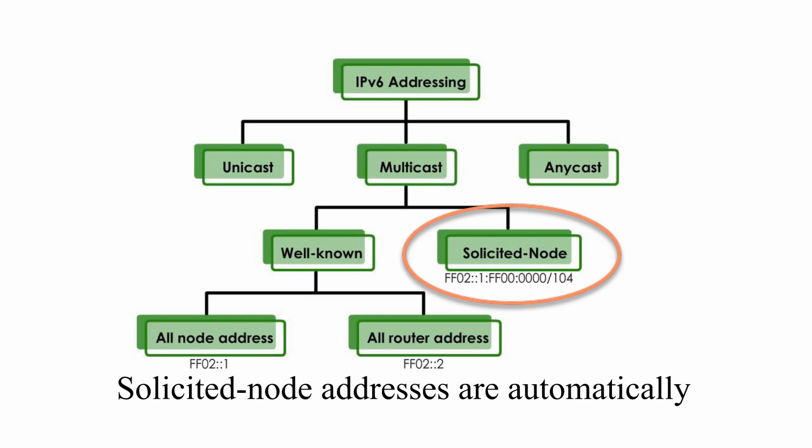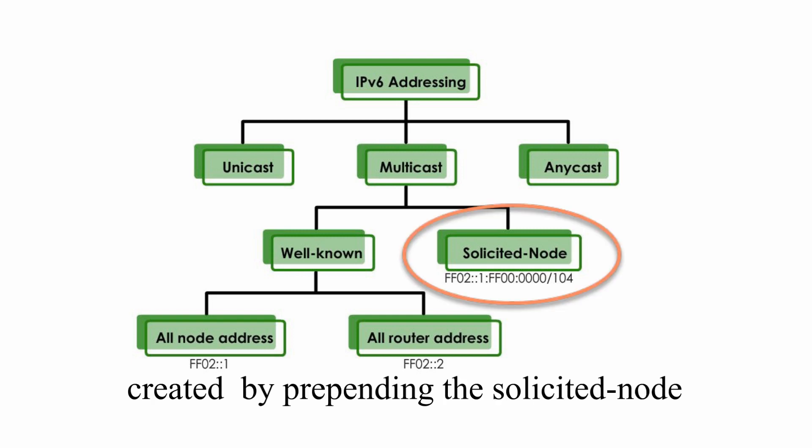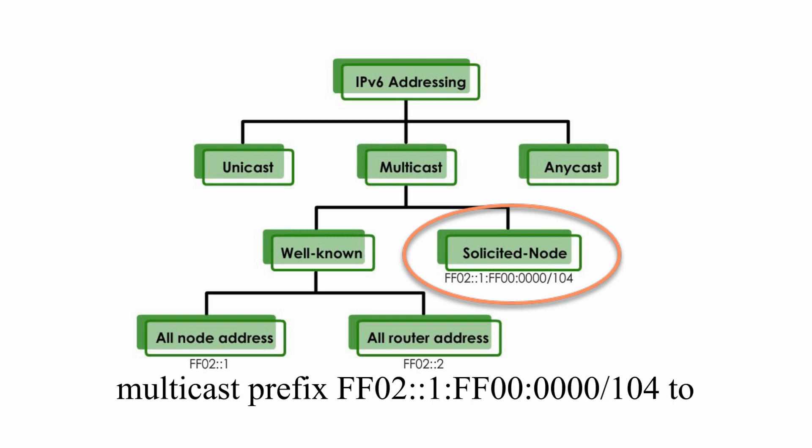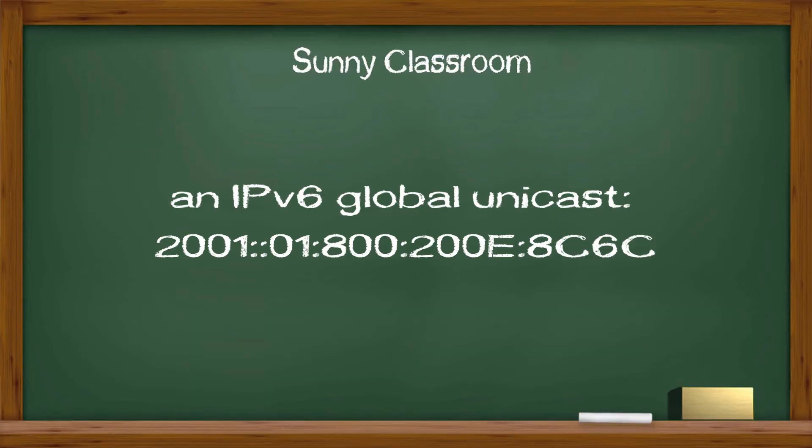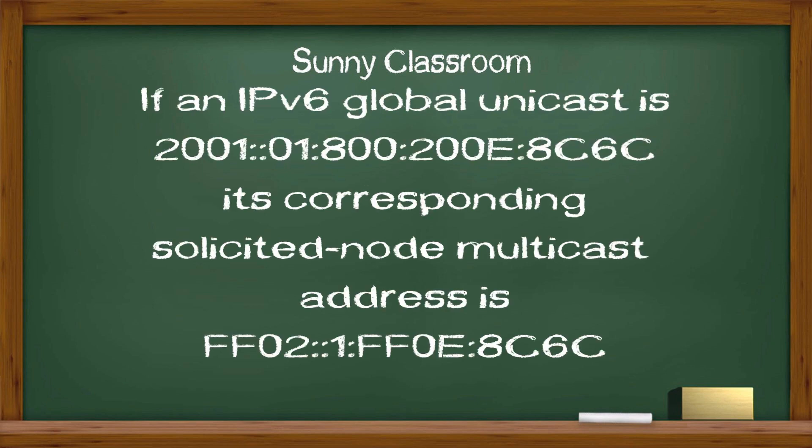Solicited-node addresses are automatically created by prepending the solicited-node multicast prefix ff02::1:ff00:0000/104 to the last 24 bits of the unicast or anycast address. For example, if we have an IPv6 global unicast address, its corresponding solicited-node multicast address looks like this. You might notice the last 24 bits are the same.